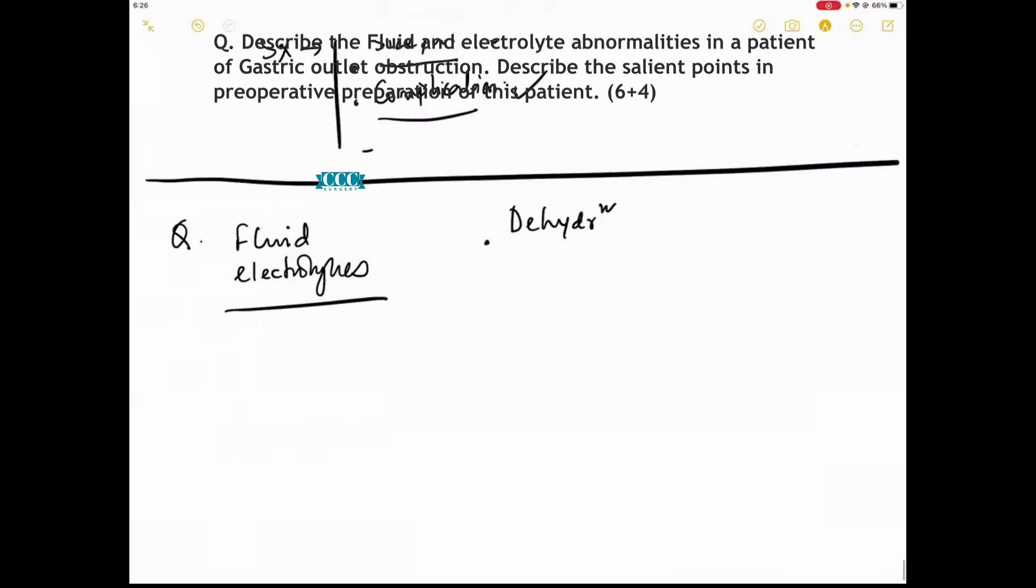Number two is metabolic alkalosis, number three hypokalemia, number four hyponatremia, number five hypokalemia. Severe metabolic alkalosis will end up with something called paradoxical...